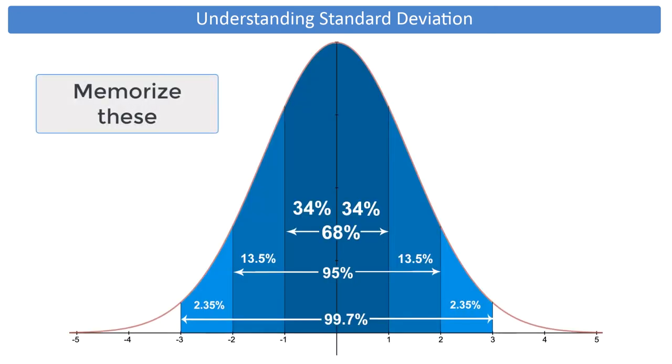This is the complete picture. It's important for you to memorize three numbers along with this image of the curve. One deviation out, 68%. Two deviations out, 95%. And three deviations out, 99.7%.